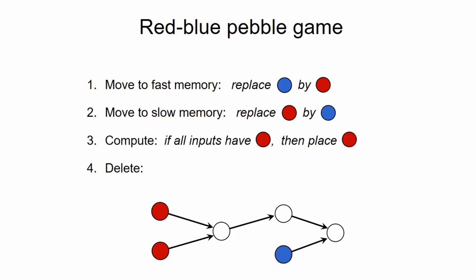Also, if a node already has a red pebble in all of its inputs, for example this node, then we can compute this node, that is, also place a red pebble on this node. And finally, at any point, we can remove a pebble of any color from the DAG. So, for example, take this pebble and simply remove it from this node.